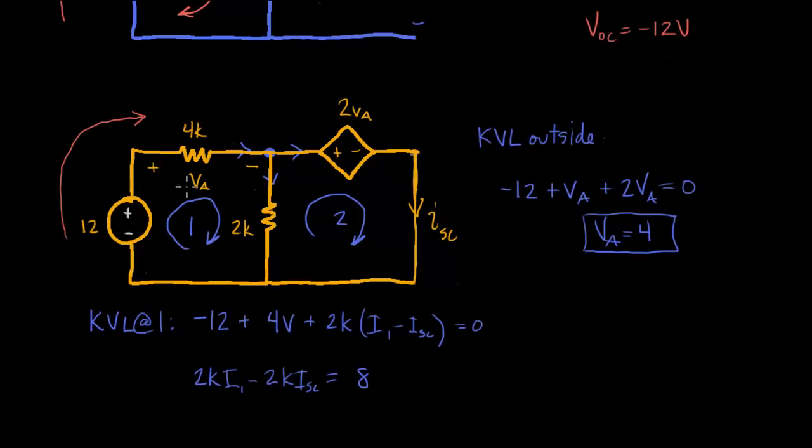And what is I1? Well, we know what I1 is, right? Because we have a voltage and we have a resistor here. So if VA is 4 and we have a 4K resistor, we have 1 milliamp. So we also have the equation that says I1 equals 1 milliamp.